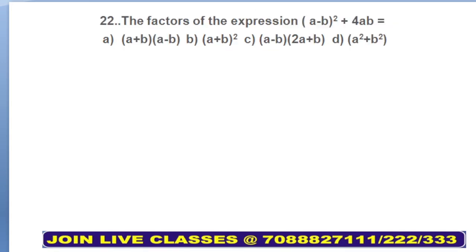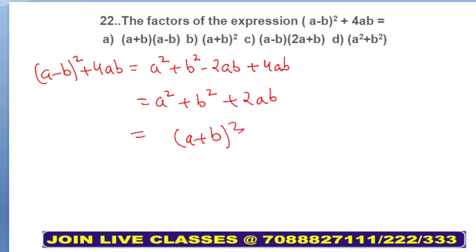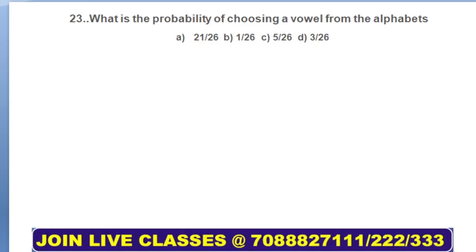Moving on to next: the factors of the expression (a - b)² + 4ab. You need to calculate the factors. You know the formula of (a - b)² is a² + b² - 2ab. Plus 4ab as it is, this will be a² + b² + 2ab. Now look at the options. a² + b² + 2ab is the formula of (a + b)². So your answer comes out to be (a + b)², that is option B.